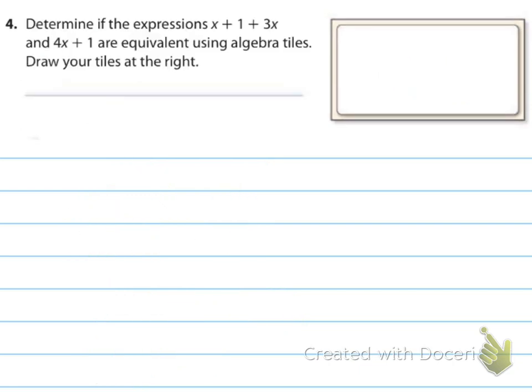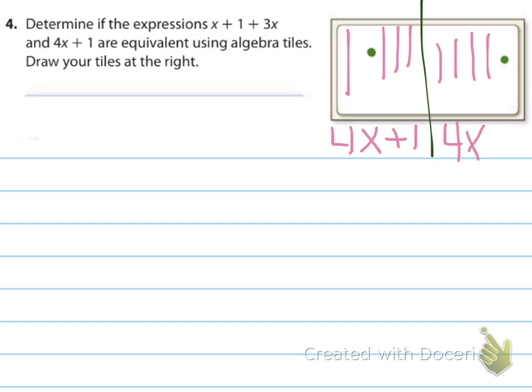So, number 4 says, determine if the expression X plus 1 plus 3 X and 4 X plus 1 are equivalent using algebra tiles. So, I'm going to separate this here, and I'm going to do my first one. 1, and then 1, 1's, and then 1, 2, 3. So, if I'm combining these, I see I have 4 X's plus 1, 1, and then for 4 X plus 1, I mean, right there, I've already verified that they're the same, but 1, 2, 3, 4, and then 1 dot, and I know that that is 4 X plus 1. So, you see that they are equivalent. So, it says determine if they're equivalent. Yes, they're equivalent.